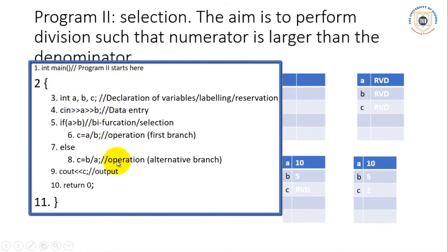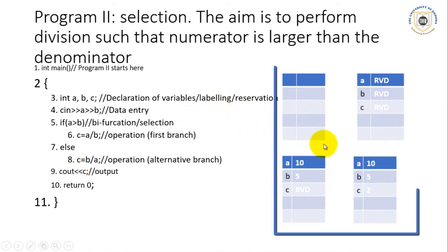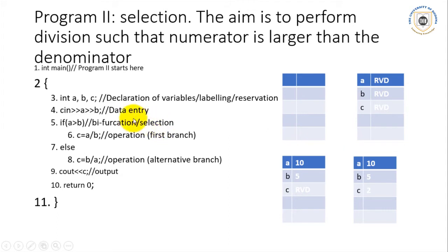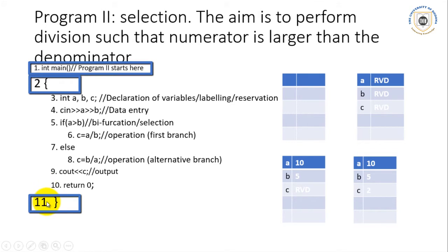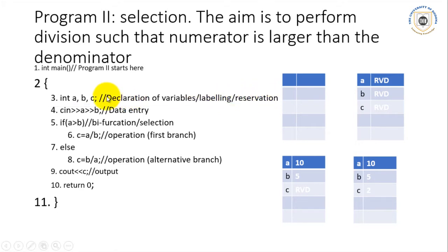The program is a working example of a calculator to perform division. Along with this example, we have our RAM diagrams on the right-hand side, which show what is happening in the machine. Lines one, two, and eleven are standard lines present in any C++ program — we must remember them. The discussion starts at line three, where we have 'int a, b, c' — declaration of variables, labeling of memory, or reservation of spaces.